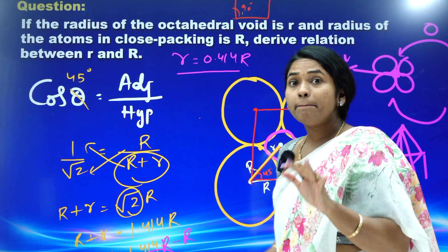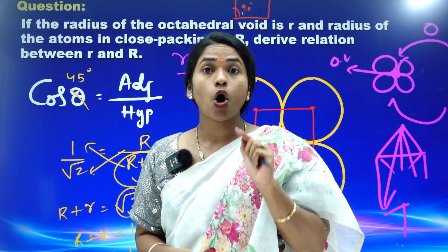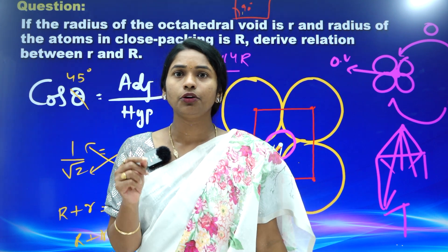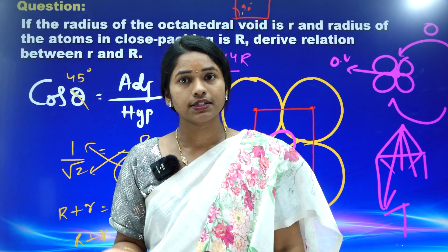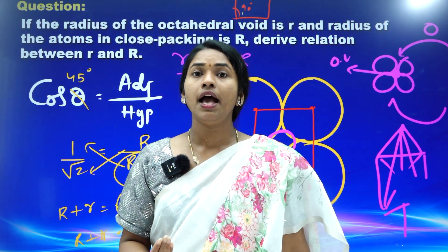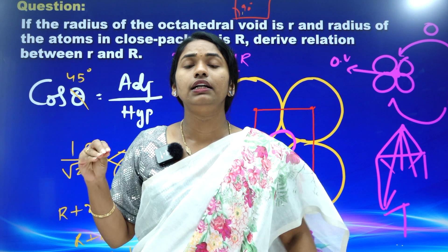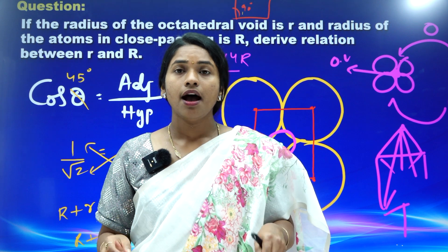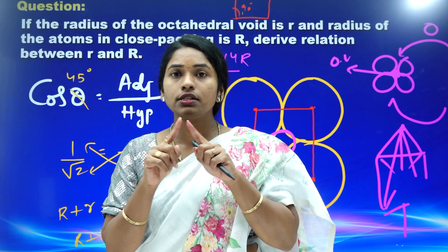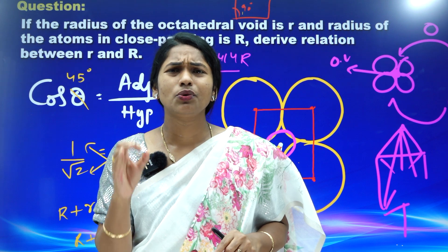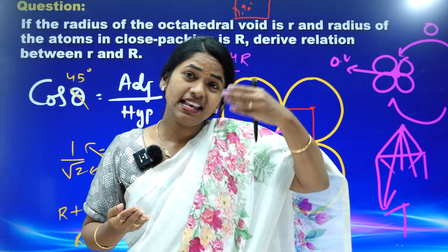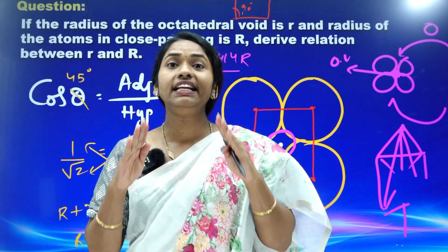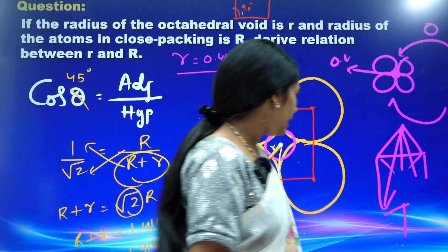Small r is the radius of the octahedral void, which is equal to 0.414 capital R. But when I substituted cos 45° = 1/√2, you may wonder how to find that value. As a NEET aspirant, it can be difficult to recall. So today I am going to tell you one small tabular column that gives you clear clarity — so that anywhere you see a cos, sin, or tan value, you can do it without any difficulty.